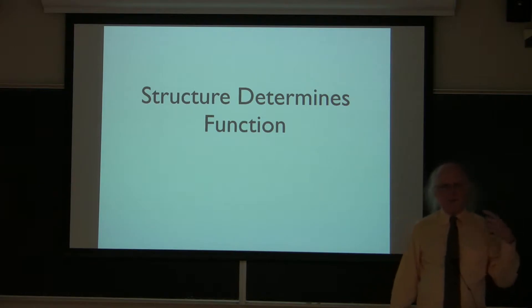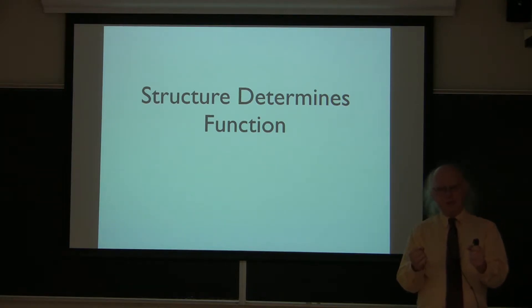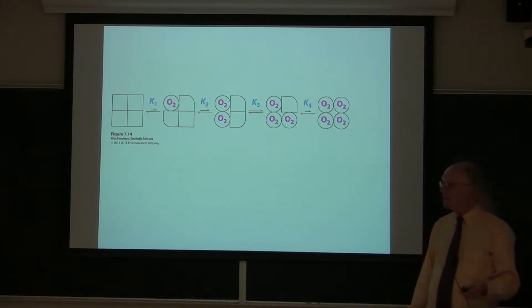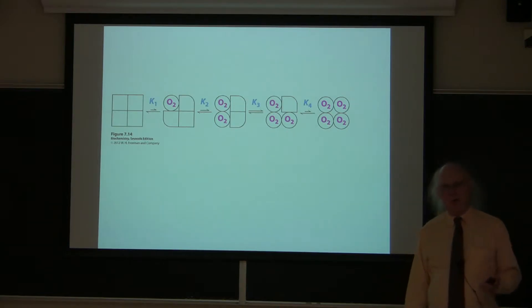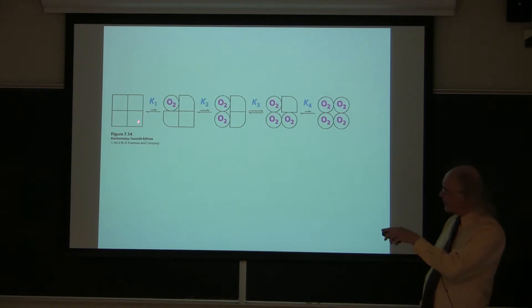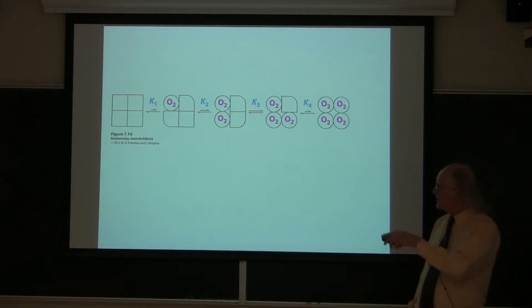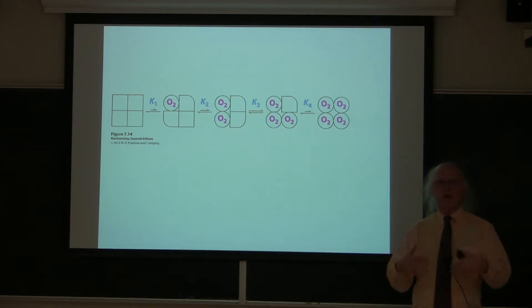The first message is that structure determines function. The structure of hemoglobin has built into it the ability to make small changes within itself, and those small changes affect the way that hemoglobin binds to and releases oxygen. Hemoglobin, after it dumps all of its oxygen, will look like the structure shown on the left. We depict these as squares to indicate a lack of oxygen binding. This state — the T state — turns out to be a state that doesn't like to bind oxygen very readily.